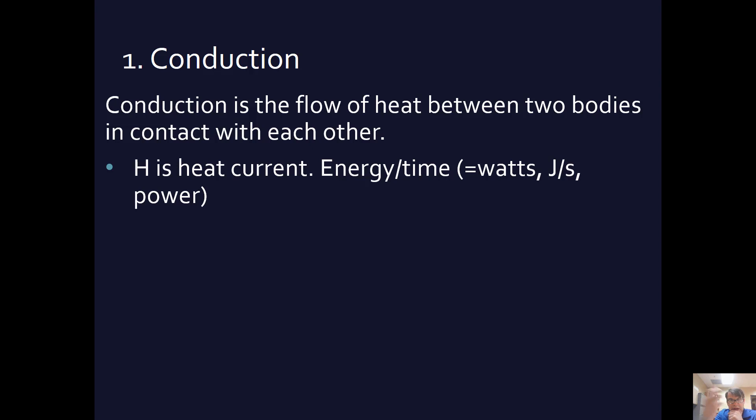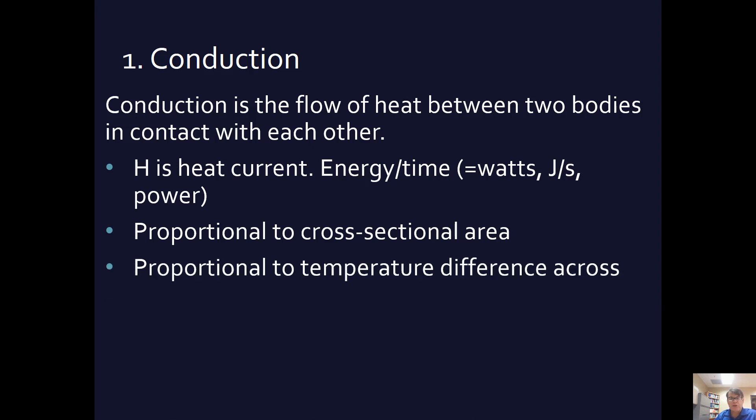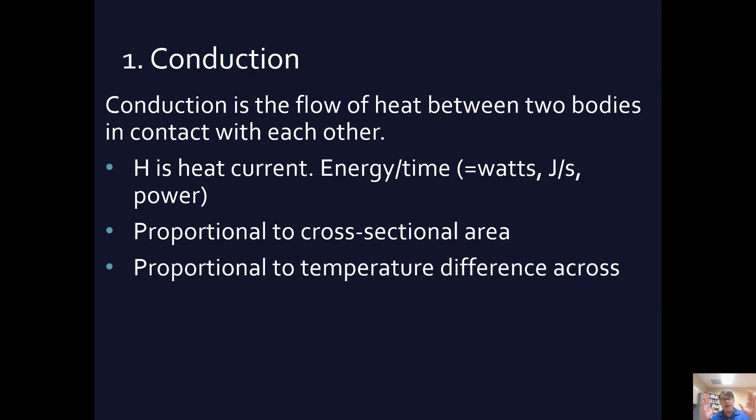We were talking about heat in terms of joules earlier in the chapter, and so to talk about heat current in terms of joules per second and watts fits. Now, the heat current, here's where we're going to set up an equation. So heat current is proportional to cross-sectional area. So the bigger the cross-sectional area touching, the more heat current is going to flow. It's also proportional to the temperature difference between the two. And so if there's a big temperature difference, then the heat is going to flow faster.